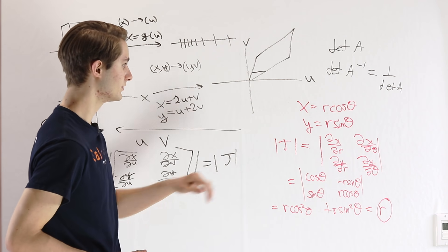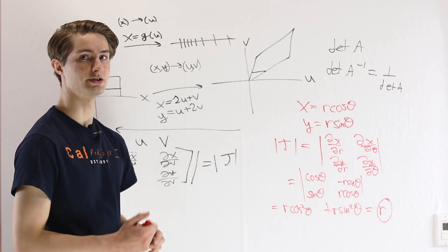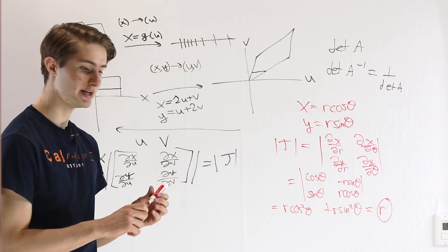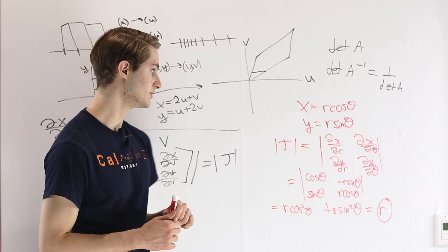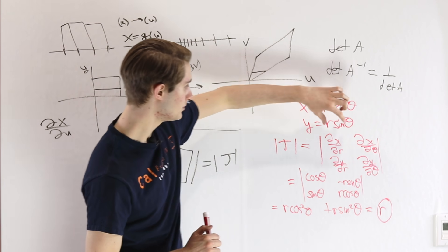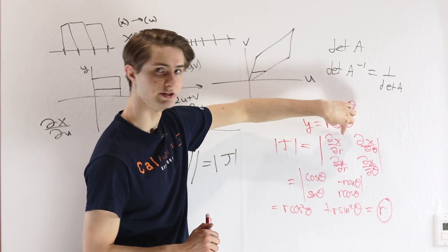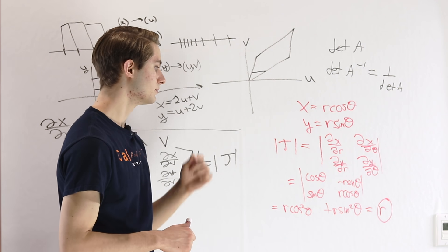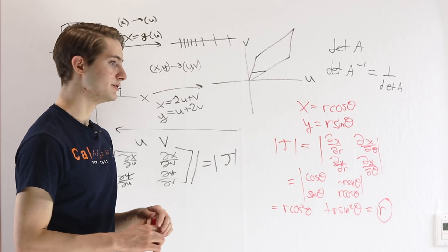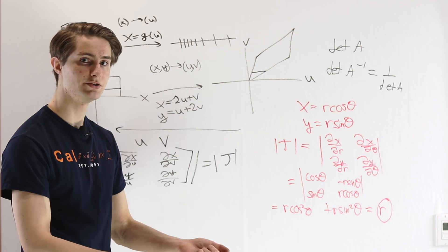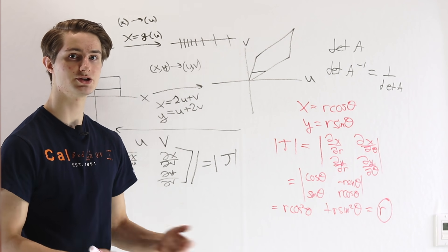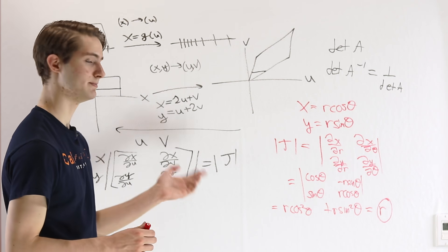One last thing to mention: we actually take the absolute value of the Jacobian determinant. Depending on how you calculate it — for example, if we had switched r and theta in this matrix calculation — we would have gotten negative r instead of r. So it has the same absolute value. We just take the magnitude to get rid of that negative sign, because we're talking about how areas are getting squished, and areas are always positive.